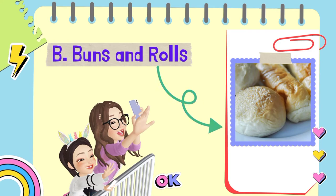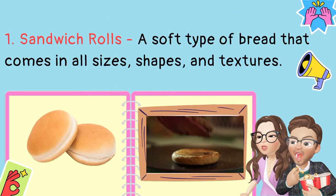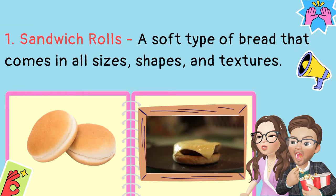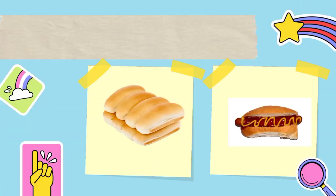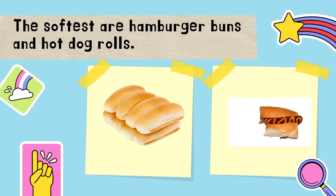B. Buns and Rolls. 1. Sandwich rolls — a soft type of bread which comes in all sizes, shapes, and textures. The softest are hamburger buns and hot dog rolls.